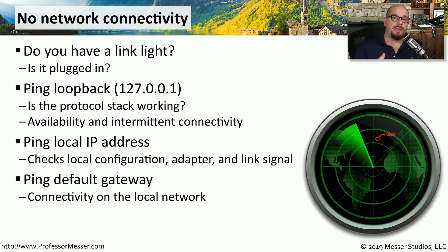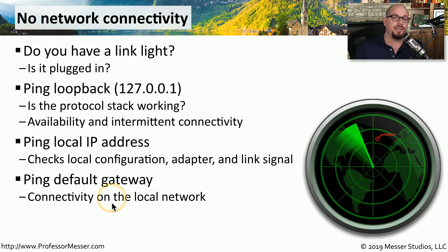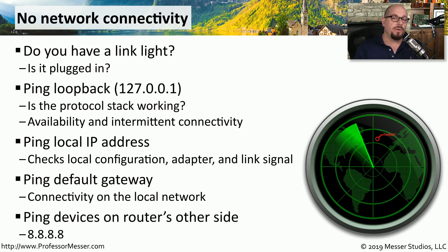The next logical step is to ping something that's outside of our computer. A device that should always be there is your default gateway. The default gateway IP address is also provided in ipconfig, so try pinging that address to see if you're able to communicate across the network. If your default gateway is responding, you can try pinging something outside of your local network. A good example is the Google DNS IP address — try pinging 8.8.8.8 to see if you're able to ping out to the internet.